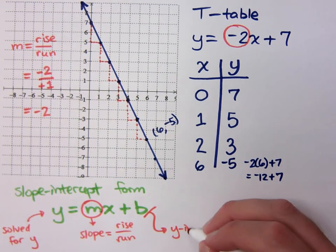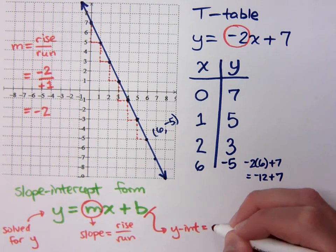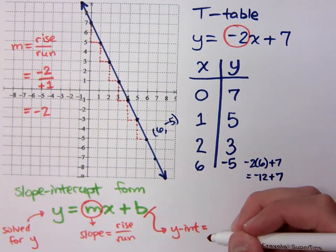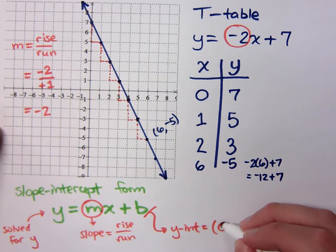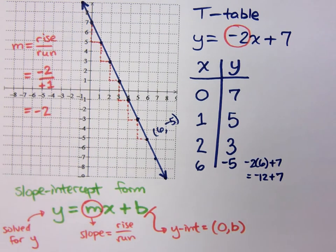That leads me to the y-intercept. But remember, intercepts are points, and we just got done saying that points are ordered pairs. So this is the ordered pair 0, b. Right?